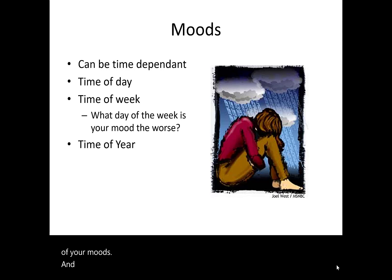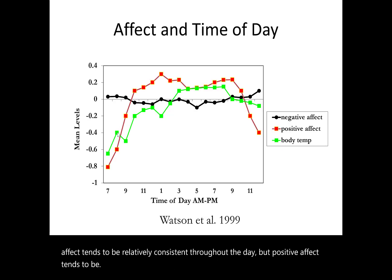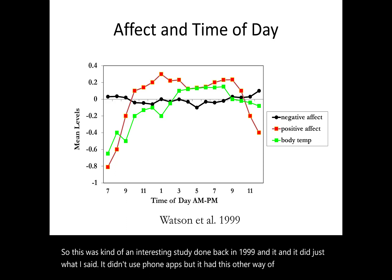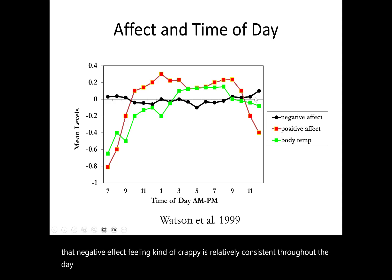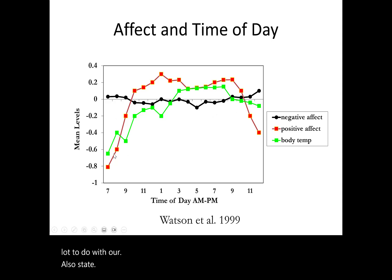Moods may be affected by the time of week — Friday afternoon versus Monday morning — and the time of year. A 1999 study tracked emotional and mood states during the day and found that negative affect is relatively consistent throughout the day, but positive affect is lower in the morning, peaks in the afternoon, and drops off as tiredness sets in. Interestingly, this correlates with a physiological response — body temperature shows the same kind of pattern.